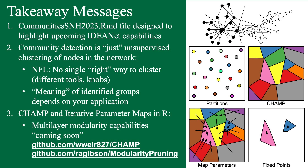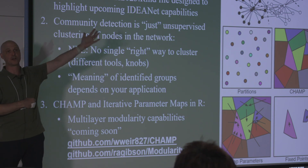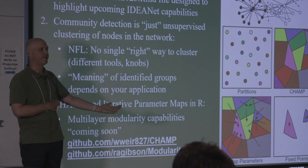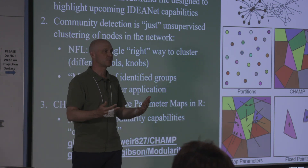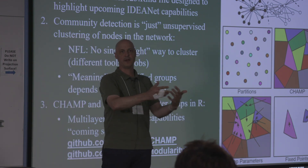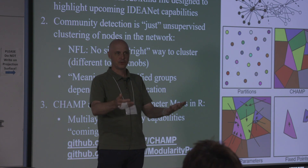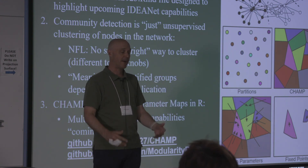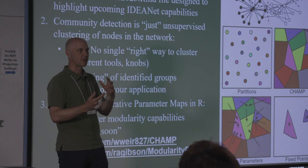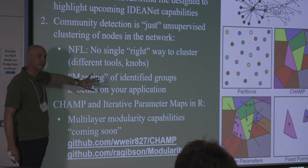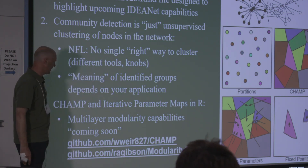What you actually want to do with these communities is up to you and your application. The story of the Facebook example is not that we found clusters — it's that those clusters were telling us something specific about Caltech, different from other universities. We could leverage that information and tell a story about how the Facebook networks related to different schools. It's just one tool you can use to say hopefully interesting things about your data.